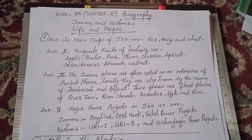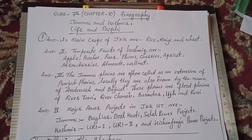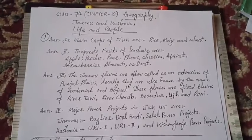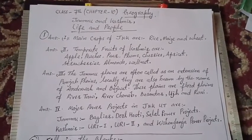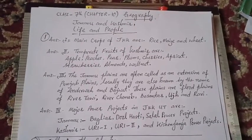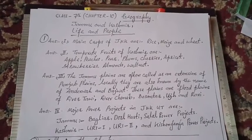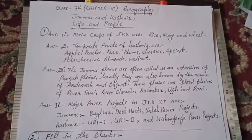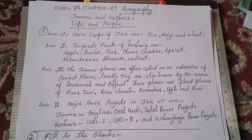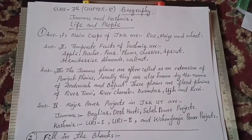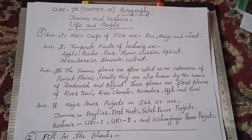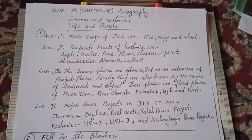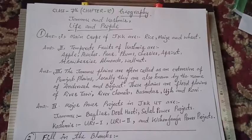The answer is: the main crops of Jammu and Kashmir are rice, maize, and wheat. Question number two: give a list of temperate fruits of Kashmir. The answer is: temperate fruits of Kashmir are apples, peaches, pear, plums, cherries, apricot, strawberries, almonds, and walnut.